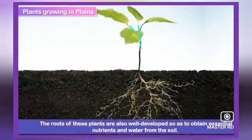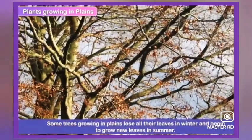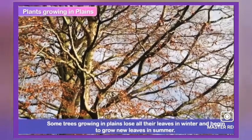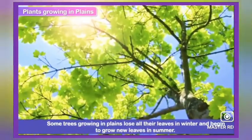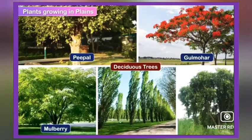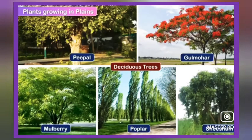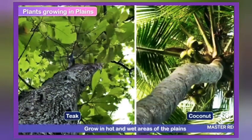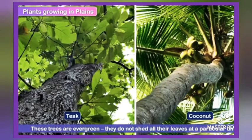The roots of these plants are also well developed to obtain essential nutrients and water from the soil. Some trees growing in plains lose all their leaves in winter and begin to grow new leaves in summer — such trees are called deciduous trees. Peepal, Gulmohar, Mulberry, Poplar and Shisham are some deciduous trees. Teak and coconut trees grow in hot and wet areas of the plains and are evergreen — they do not shed all their leaves at a particular time.